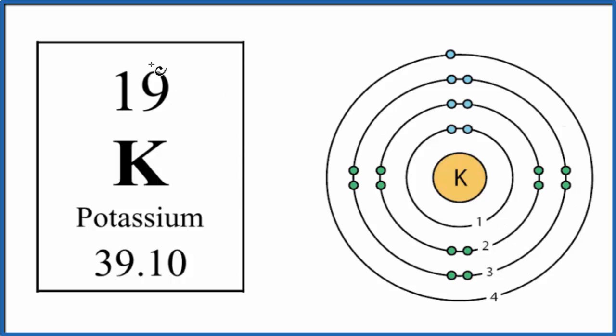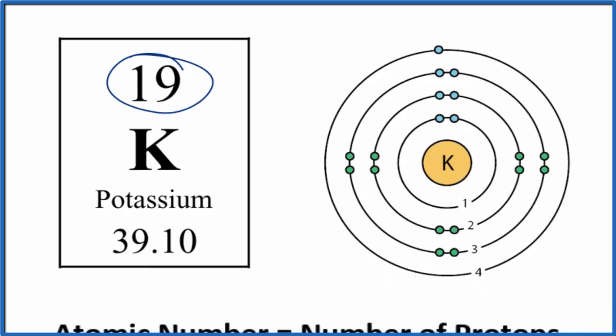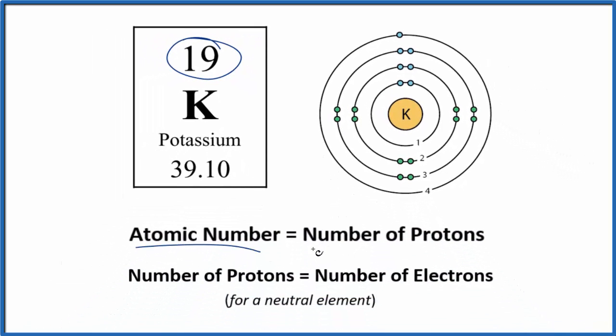The first thing to note is that the atomic number for potassium, that's 19. And the atomic number, that's the number of protons. Atomic number is equal to the number of protons here in the nucleus for the potassium atom. So we have 19 protons in the nucleus.